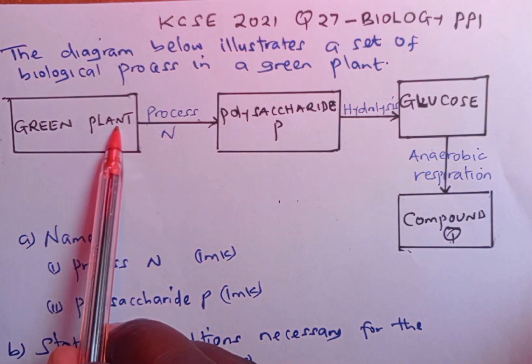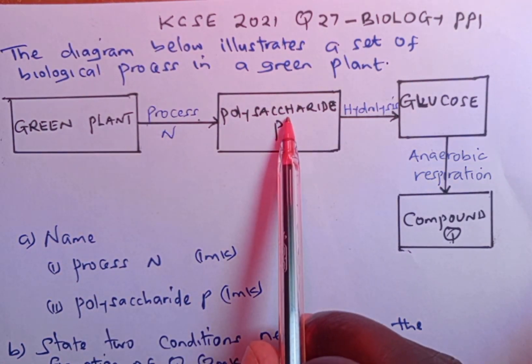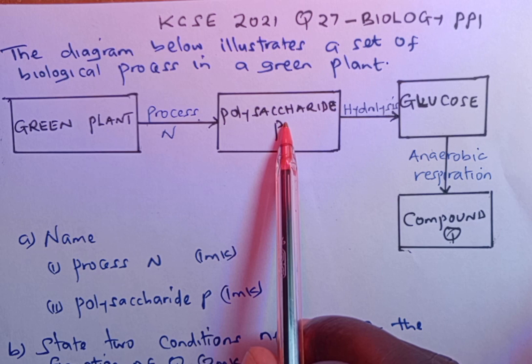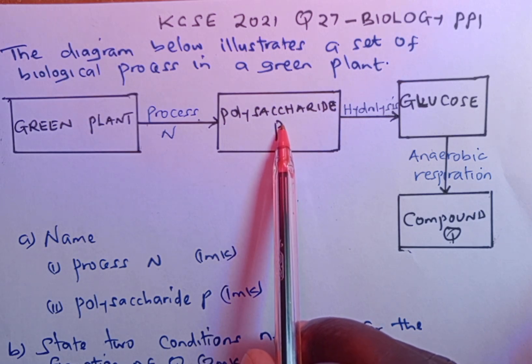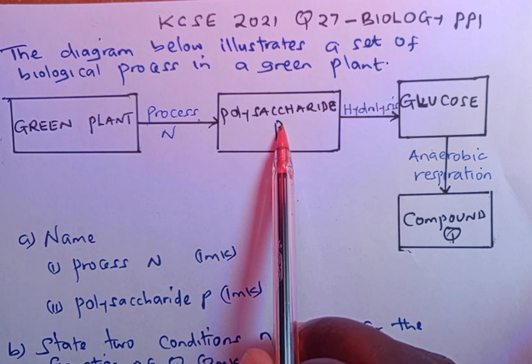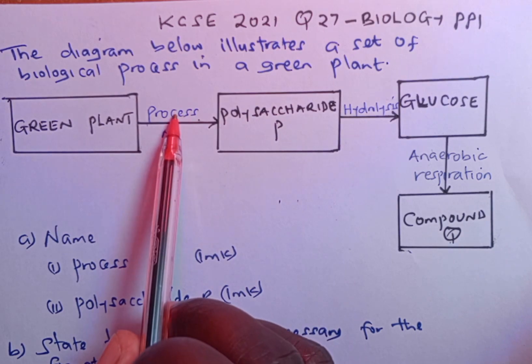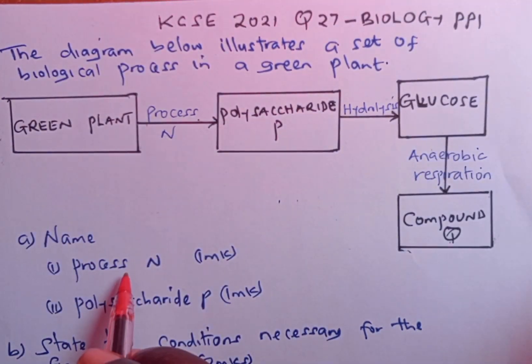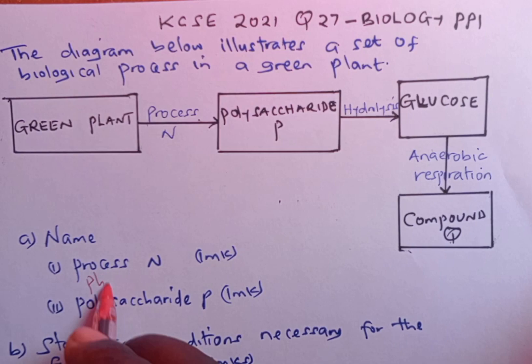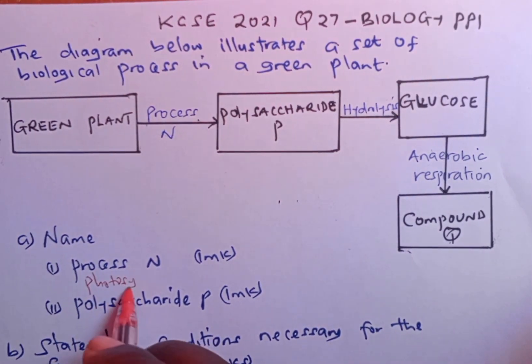From the green plants, we have polysaccharide. This is the complex carbohydrate in plants, and remember plants make their own food through the process known as photosynthesis, and therefore process N is going to be photosynthesis.